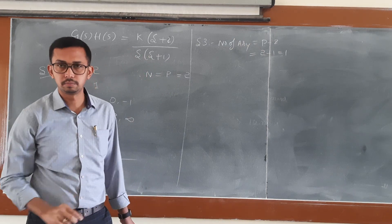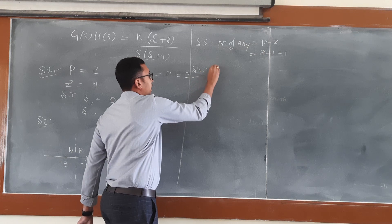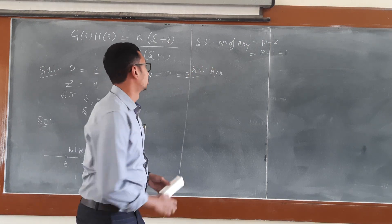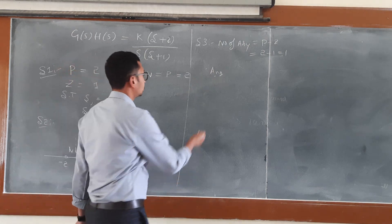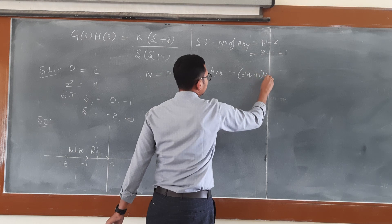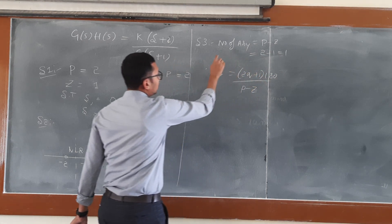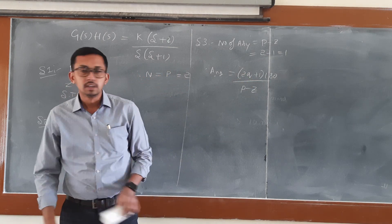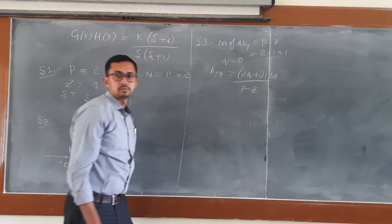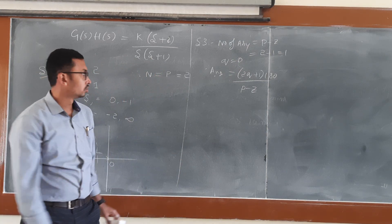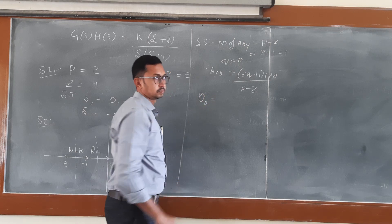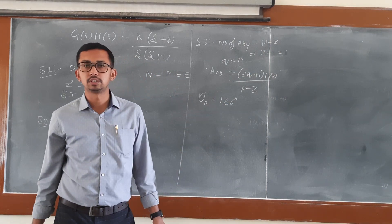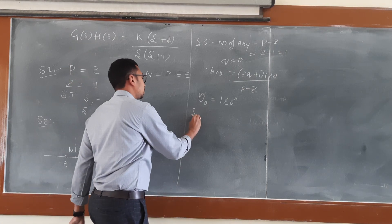Step number 4: angle of asymptotes. The formula is theta = (2Q + 1) × 180 / (P - Z). Q varies from 0, 1, 2, 3, but since the number of asymptotes is 1, Q equals 0 only. Substituting Q = 0 gives theta_0 = 180 degrees.